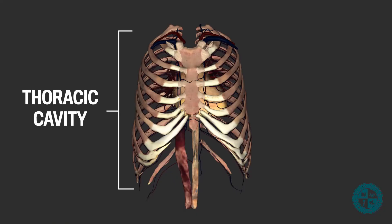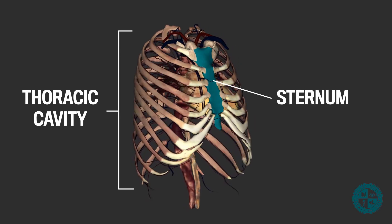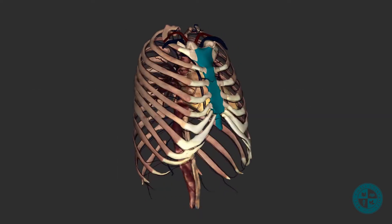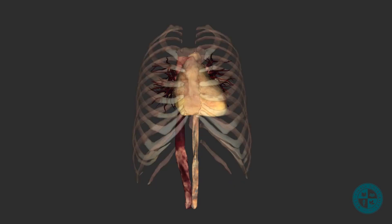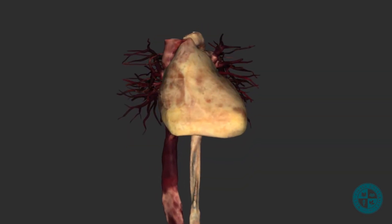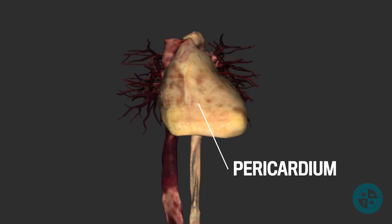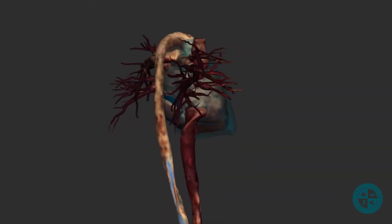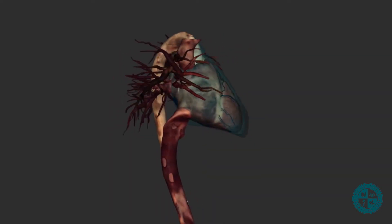Now let's switch gears and get to know more about where our heart is located in the body. The heart is located in the thoracic cavity, directly posterior to the sternum. If we start by dissecting away the ribs and sternum, we will begin to expose connective tissue structures that surround the heart. This is called the pericardium. The pericardium surrounds the heart completely and is composed of various components.